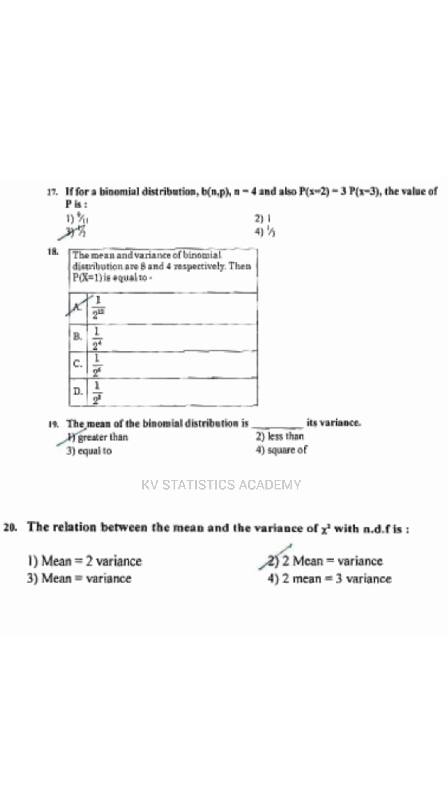If for a binomial distribution B(N, P), N equals 4 and also P(X=2) equals 3P(X=3), the value of P is 1 by 2.